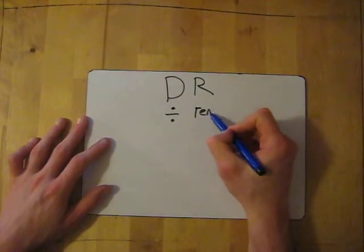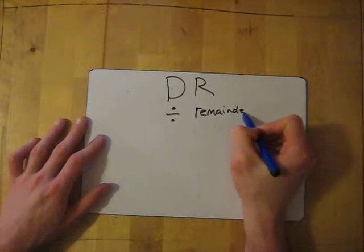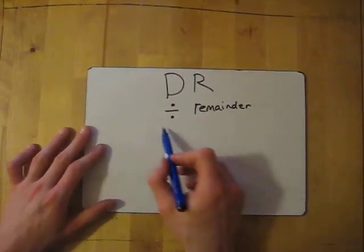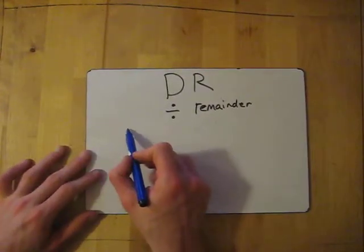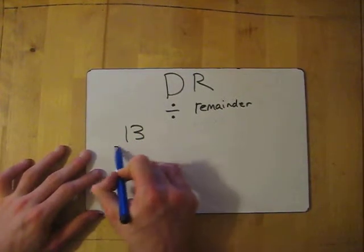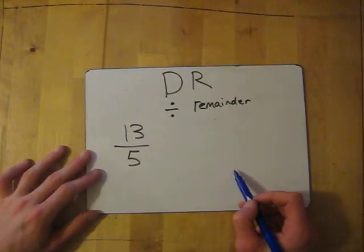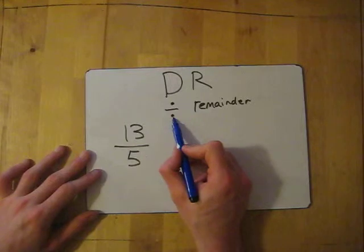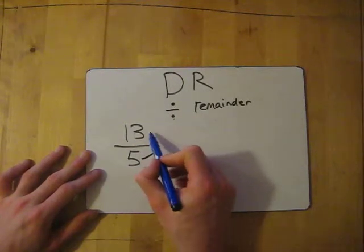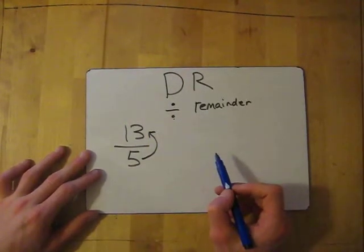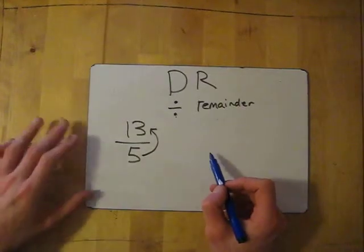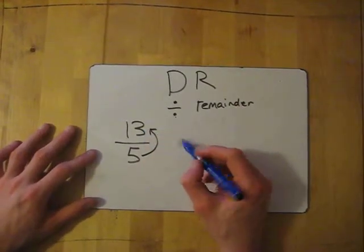If I have the improper fraction 13 over 5 and want to turn it into a mixed number, first you divide. We divide the 5 into the top number—the denominator into the numerator. So 5 into 13 goes 2 times.